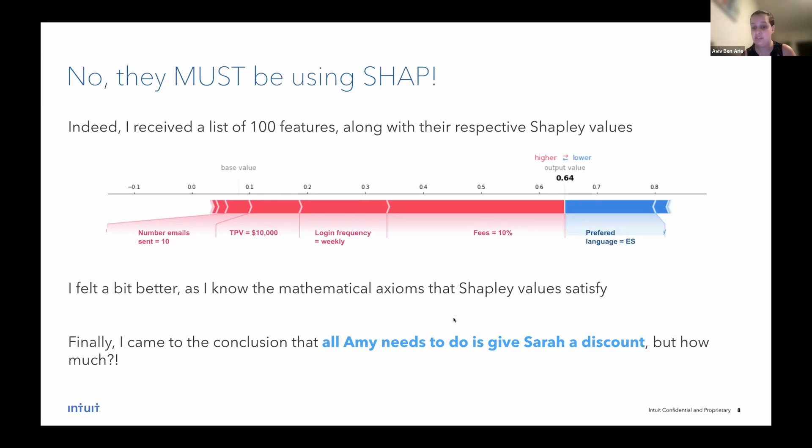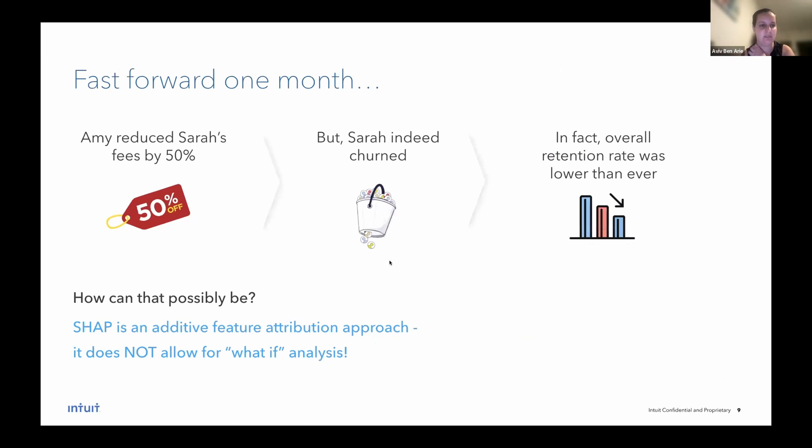By how much does Amy need to give Sarah a discount? This is something that SHAP simply can't answer. So fast forward one month, and Amy indeed reduced Sarah's fees by 50%. But Sarah indeed churned, although this is what SHAP recommended or explained regarding the model prediction regarding churn. And in fact, overall retention rate was lower than ever for the entire company and situation was very bad. How can that possibly be?